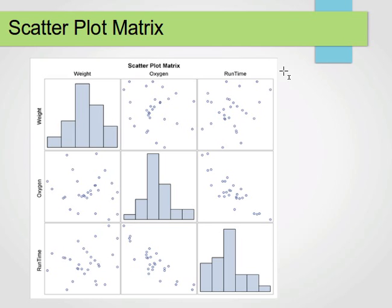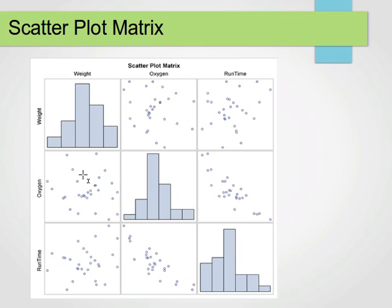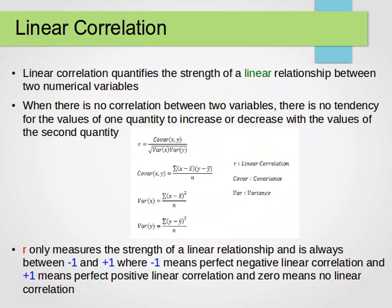Using a scatter plot matrix, we put variables on x and y axes and plot each pair against each other. For example, here we have weight, oxygen, and runtime. Weight against weight would be a diagonal — shown here as a histogram. We have weight against oxygen and weight against runtime. Notice that the upper and lower triangles of the matrix are equivalent — x and y axes simply swap — so the two figures are mirrors of each other around the diagonal.